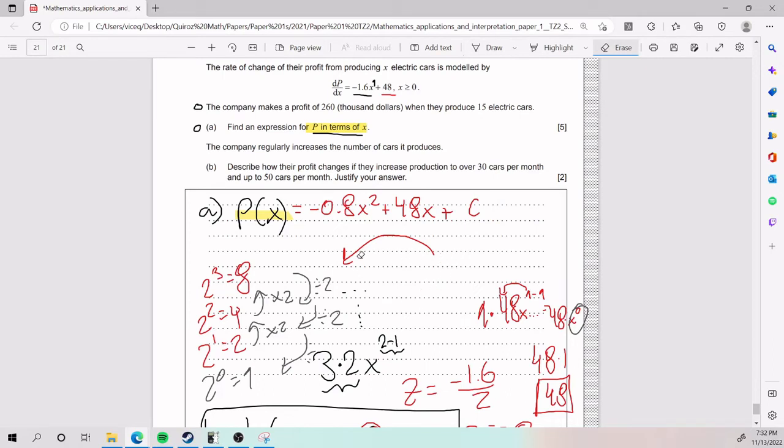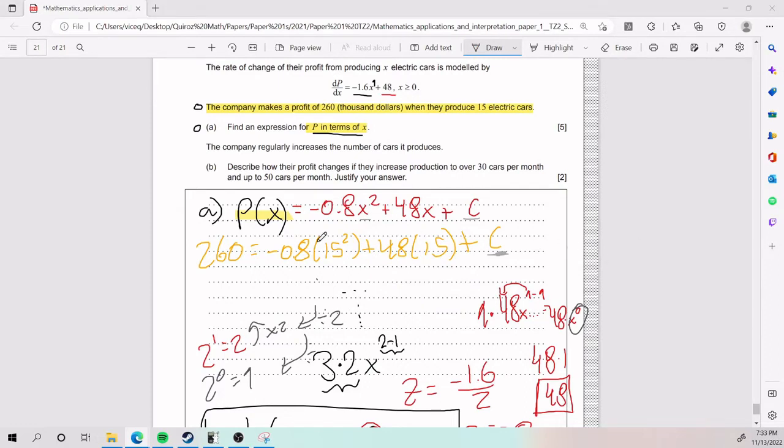Fortunately, this problem gives us very valuable information for finding out what C is. What we said earlier was going to be very useful, that the company makes a profit of $260,000 when they produce 15 cars. This is applied now. So I'm going to plug in 15 for X, $260,000 for Y, and work from there. And so the beautiful thing that just happened is that before we had two variables. We had the variable of X and C. Now we have only the variable of C and a bunch of numbers. So I move those numbers around, find out what C is. Play around with your calculator. You're going to find out that C is negative 280. I plugged it in over here for what I had before. And that is, quite literally, part A.